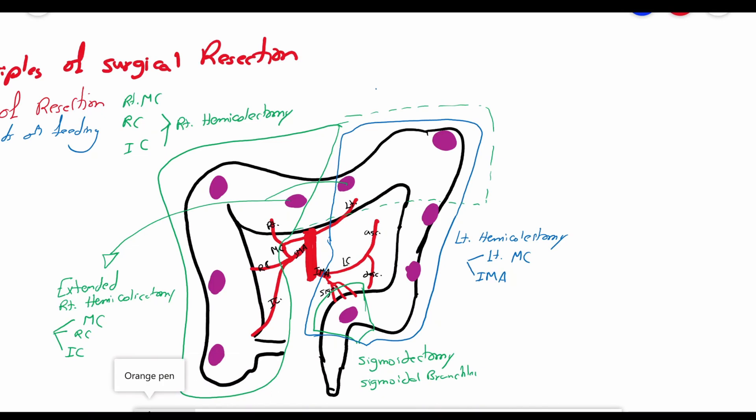Lastly, the tumors of the splenic flexure are treated with the partial left hemicolectomy procedure, which requires the removal of the splenic flexure along with the distal third of the transverse colon, as well as the proximal third of the descending colon. The feeding vessels are the left branch of the middle colic artery and the ascending branch of the left colic artery.